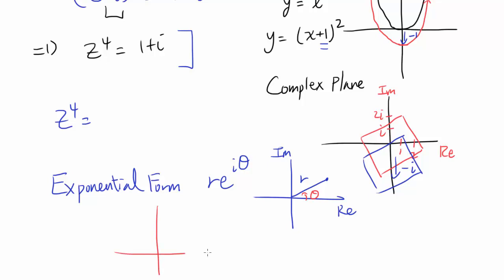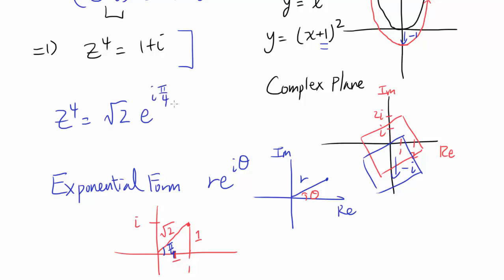1 plus i is very easy to write in exponential form. The point 1 plus i has both real and imaginary parts equal to 1, so the hypotenuse is square root of 2, and the angle is π/4. So 1 plus i equals √2 times e to the i·π/4.